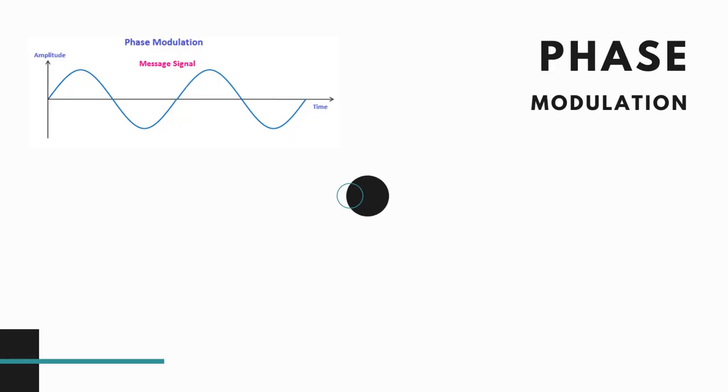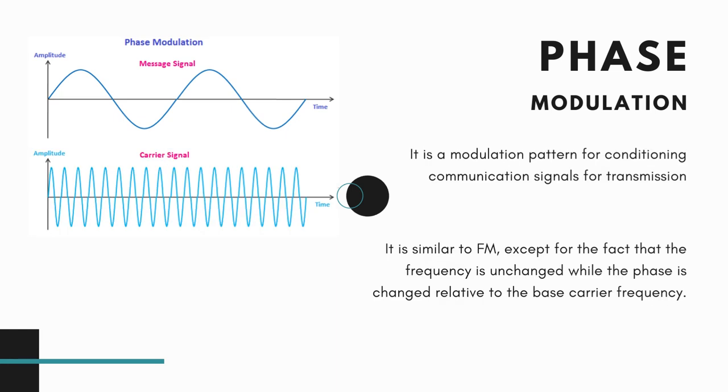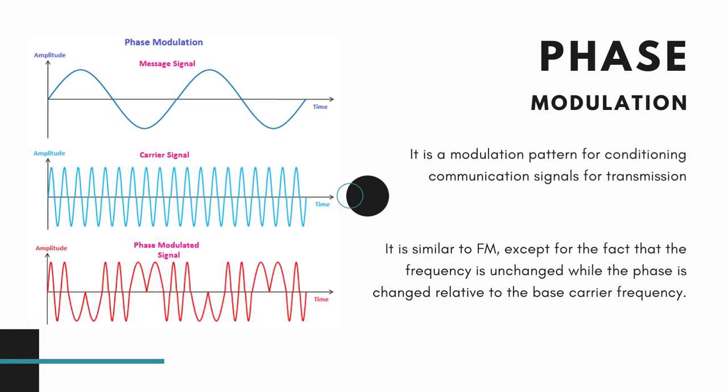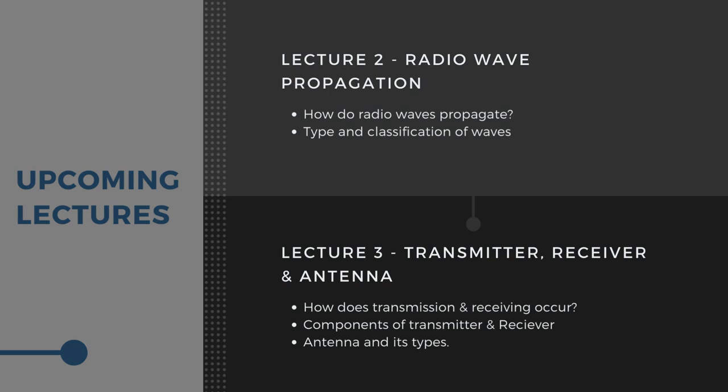There is a third type known as phase modulation. It is similar to frequency modulation except for the fact that frequency is unchanged while the phase is changed relative to the base carrier frequency.